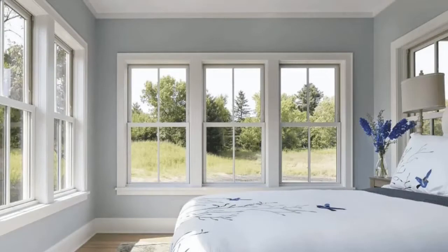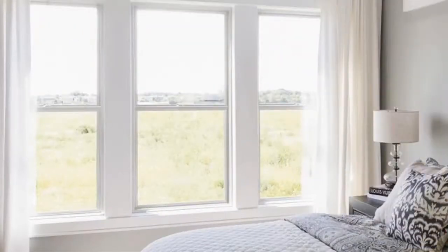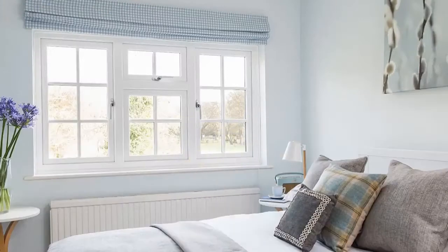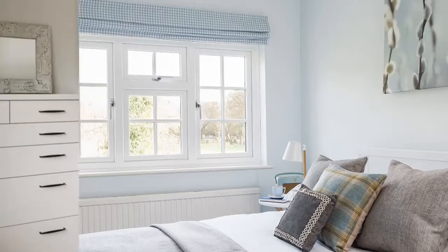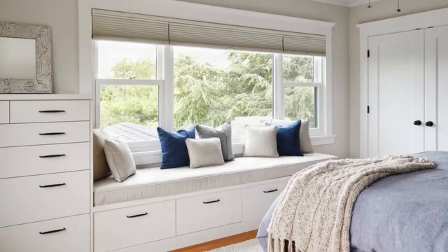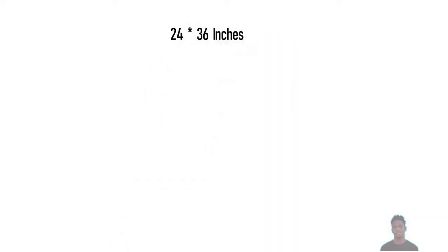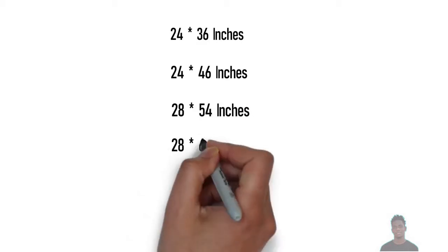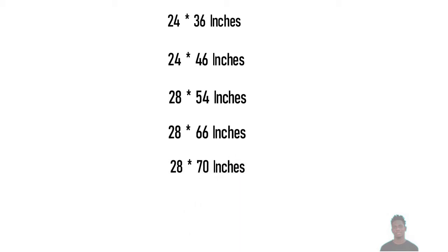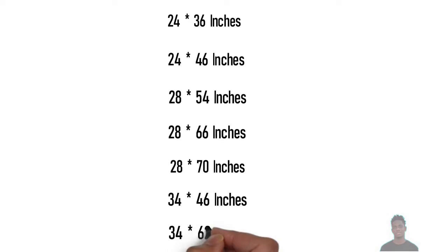Standard bedroom window sizes can differ from area to area. Within the past 20 years, larger windows that allow natural sunlight into the bedroom have become more popular. Unless the windows are specialty or custom, it should be relatively easy to locate common window sizes your home needs. Standard bedroom window sizes are: 24x36 inches, 24x46 inches, 28x54 inches, 28x66 inches, 28x70 inches, 34x46 inches, and 34x62 inches — either single-hung or double-hung.